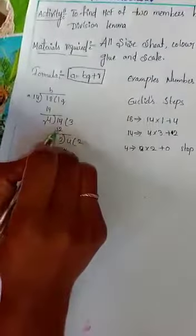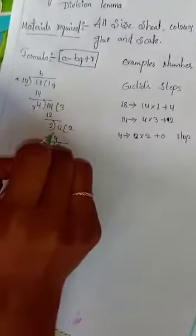3 times 4 is 12. 14 minus 12 is 2. 2 goes into 4, remainder is 0.